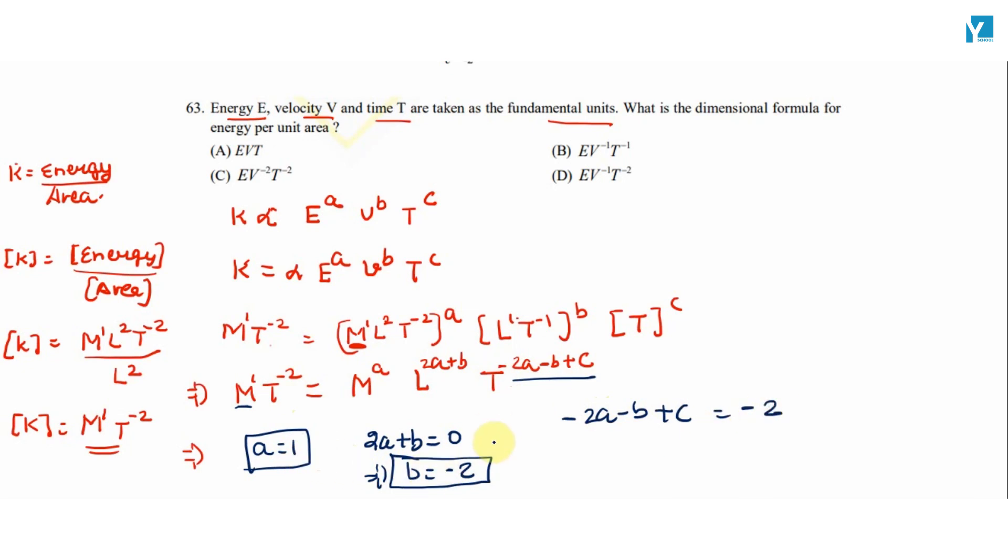T ki power: -2a minus b plus c equal to -2. On putting the values of a and b, a ki value 1, b ki value minus 2, so this will be plus 2, minus 2 plus c is equal to minus 2. So c also equal to minus 2.